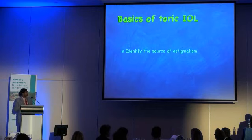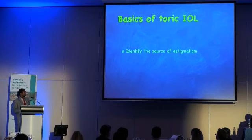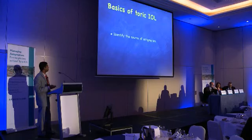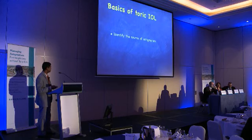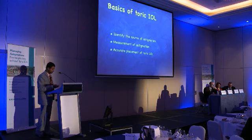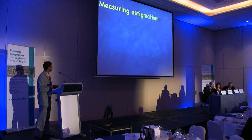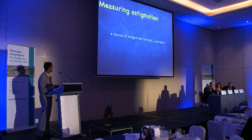For people who haven't used toric intraocular lenses and are planning to incorporate this into your practice, I just wanted to give you the basic steps to consider while planning to offer toric intraocular lenses. The first and foremost is to identify the source of astigmatism. Then we're going to look at the way we measure astigmatism, and then accurate placement of the toric intraocular lens, which Professor Findl will be talking about in more detail. I'll be concentrating on the first two - measuring astigmatism.